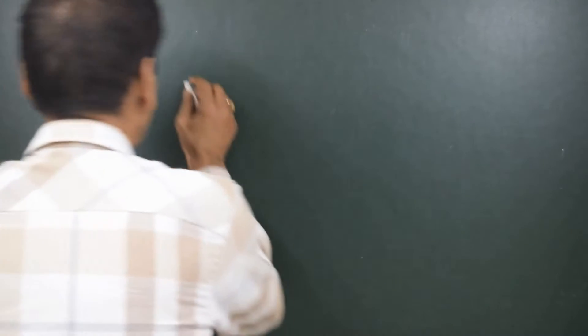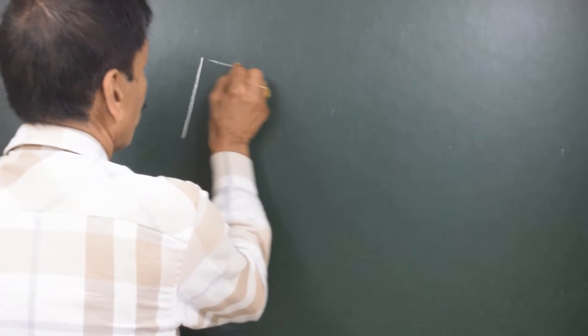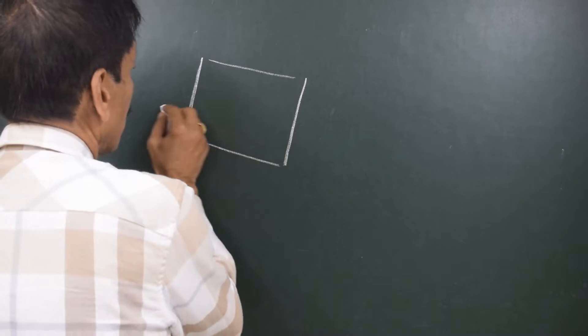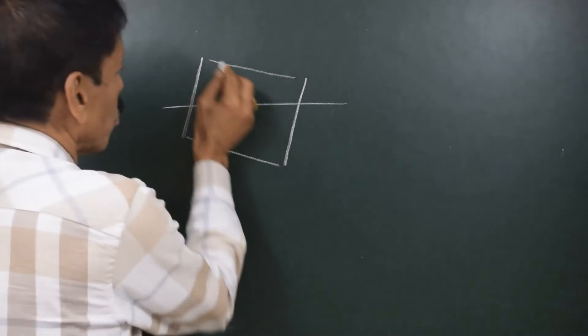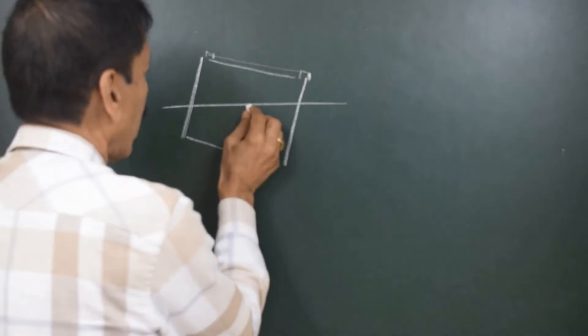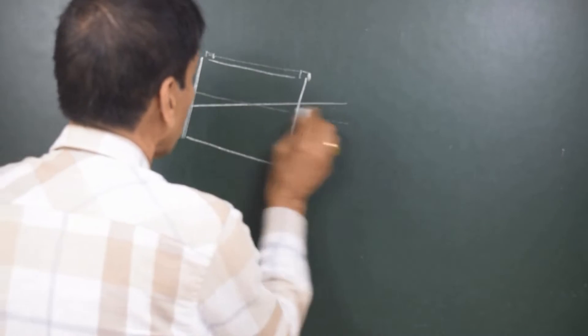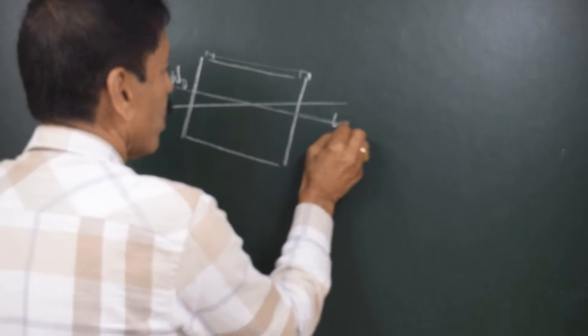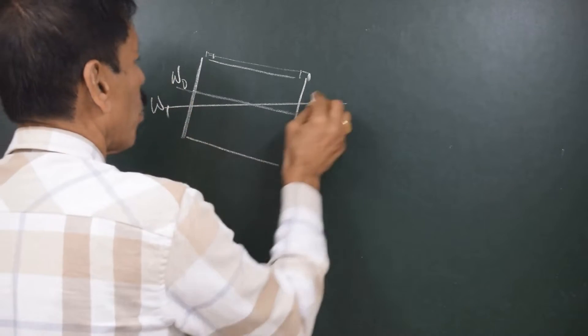So we are trying to understand the principle of the inclining experiment. First of all, let us understand what is list. List means the inclination of the ship upon shifting a weight transversely. Say I have shifted a weight from here to here — the vessel gets inclined on one side. This was the original water level W0L0 and this is the new water level W1L1.